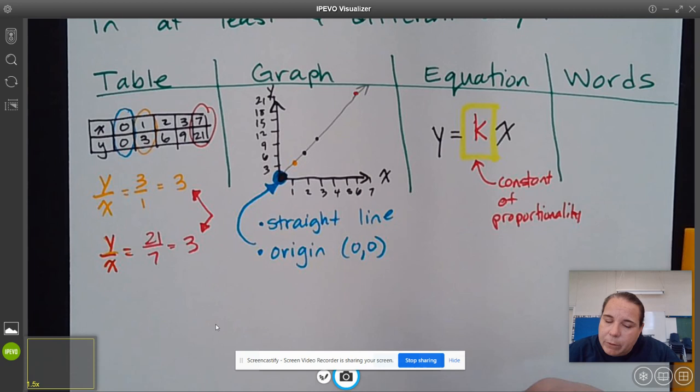We're going to interchange some of these words. But rate of change and slope are words that are used for both proportional and non-proportional relationships. So in only proportional relationships, we have this thing called the constant of proportionality.